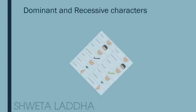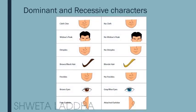Let us see some dominant and recessive character examples in human beings. Cleft chin is dominant; no cleft chin is recessive. Widow's peak is dominant; straight hairline pattern is recessive. Dimples are dominant; no dimples is recessive. Brown or black hair is dominant; blonde hair is recessive. Freckles on the skin is dominant; no freckles is recessive.